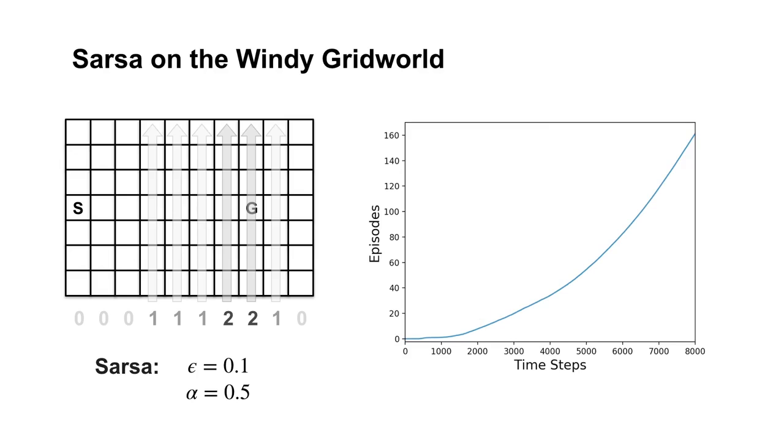The curve gradually gets steeper, indicating that episodes are completed more quickly. Around 7,000 steps, the greedy policy stops improving.